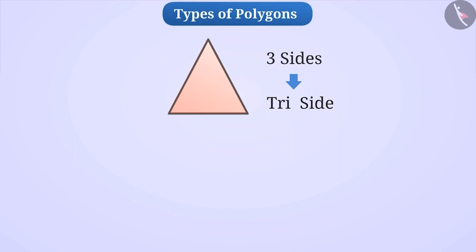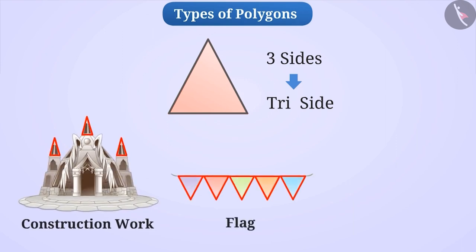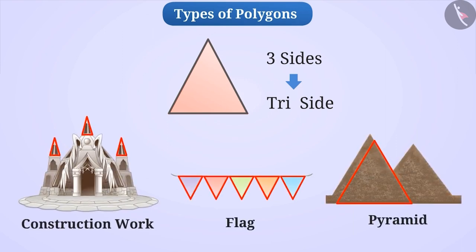For example, a polygon with three sides is called a triangle. We can see its use in construction, making flags, building pyramids, etc.